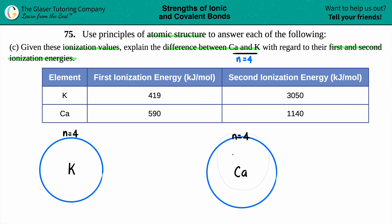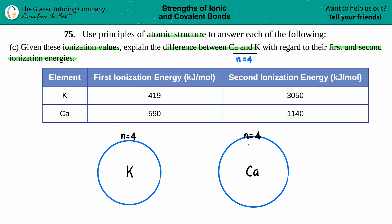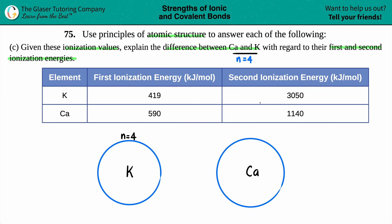Let's draw the valence electrons. Calcium is in group two so it's got two valence electrons - one and two, I'll put them one on each side. Potassium is in group one so it has only one valence electron. Valence electrons are the electrons in the outermost shell, in this case n equals four.